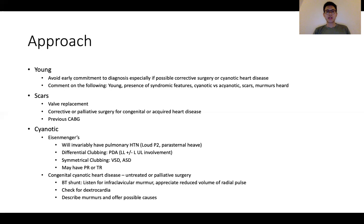In patients with congenital cyanotic heart disease, they can be untreated or palliative, because if they are treated, they should technically not be cyanotic anymore. It's important to evaluate for BT shunts, auscultate whether the shunt is patent, appreciate the adequacy and equality of the pulse volume to see whether one shunt is functioning better than the other, evaluate for dextrocardia, and describe the murmurs and offer possible causes. In such instances, it might not be possible to confidently state a single pathology — one may attempt to tie the findings together in a unifying diagnosis like tetralogy of Fallot, for example, or choose to describe them and provide different possibilities.